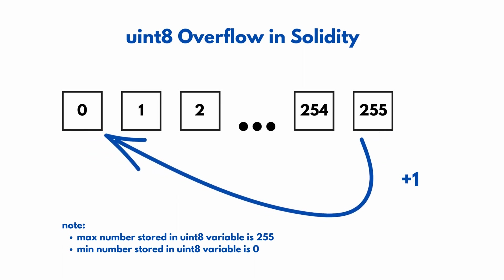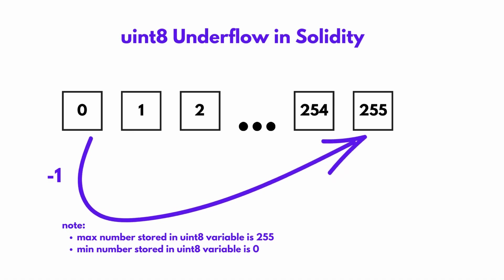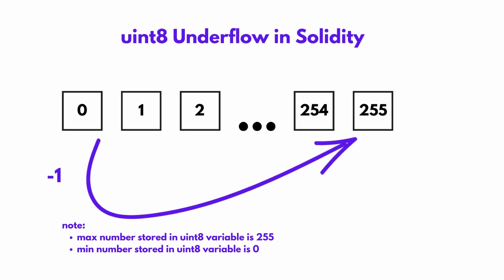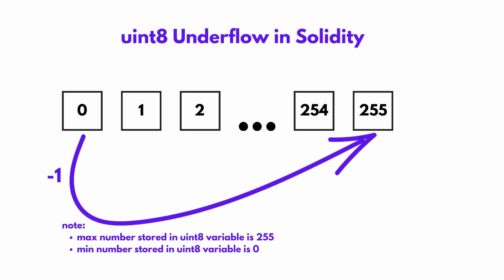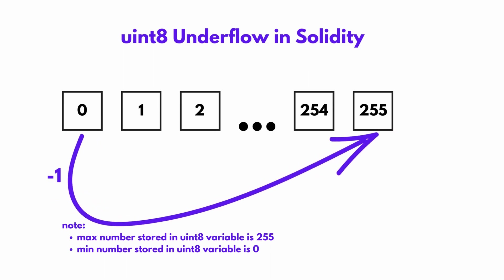Instead of going to 256, which can't exist, it goes all the way back to the start and the first number will be 0. With underflow it's a similar thing: if your number is 0 and you subtract 1, there are no negative numbers in unsigned integers, so it goes all the way to the end of possible numbers representable by uint8, and that number will be 255. This is very unexpected — we're not used to math working that way, we just expect the number to keep incrementing or decreasing.